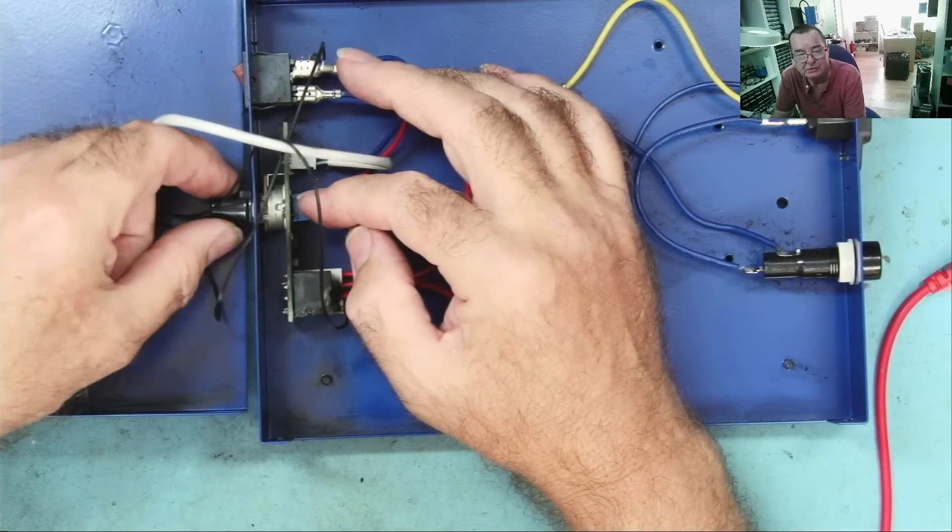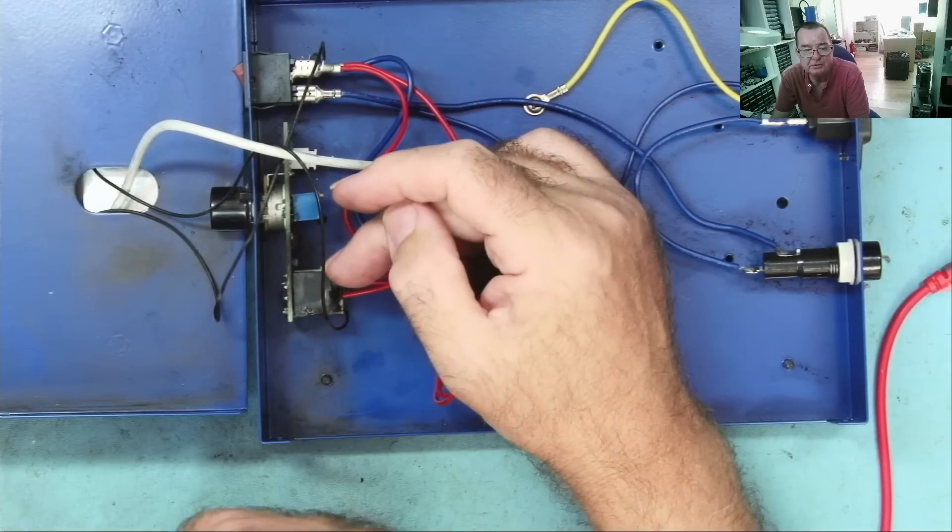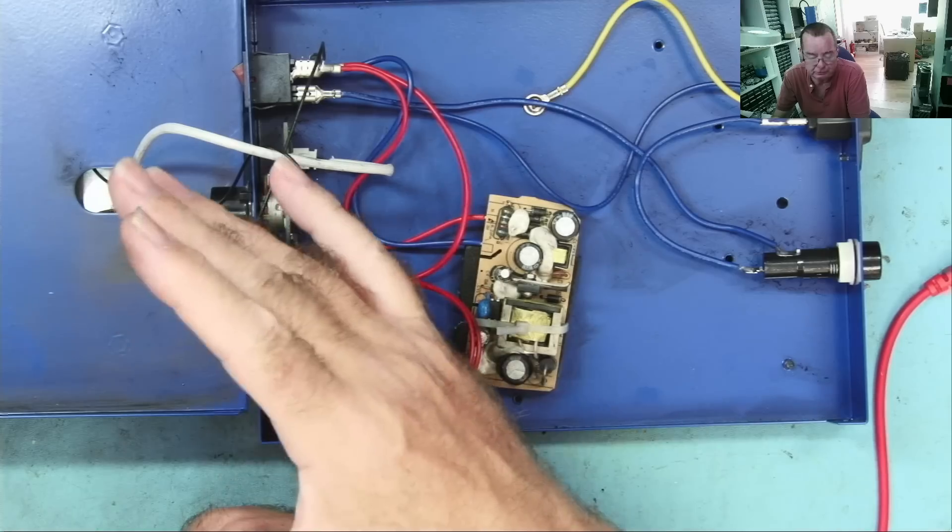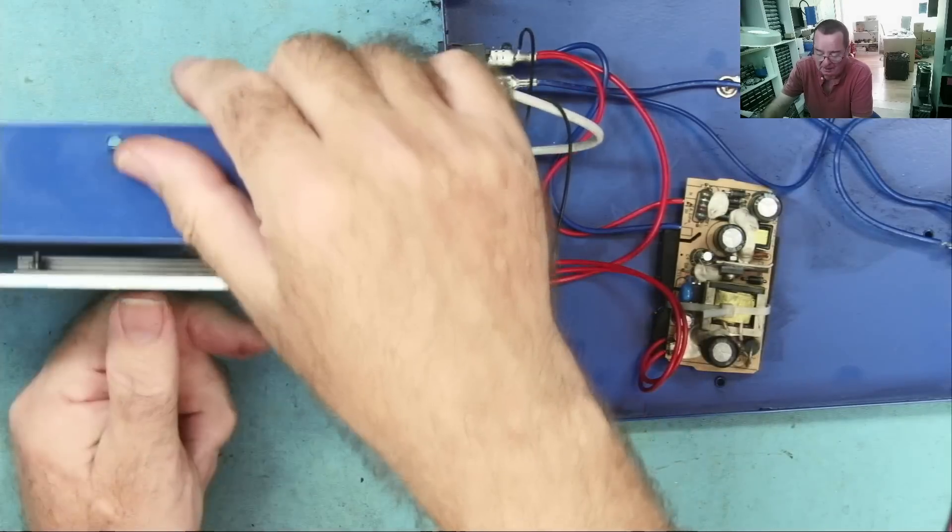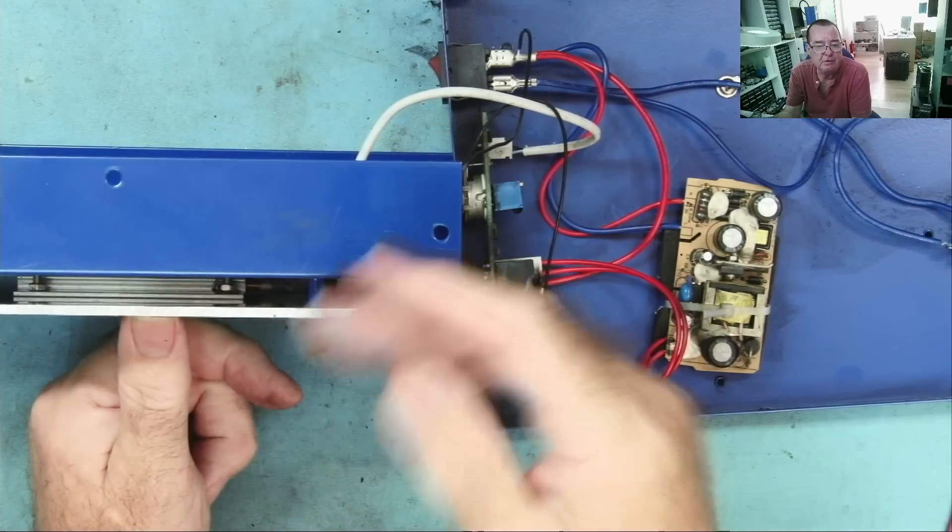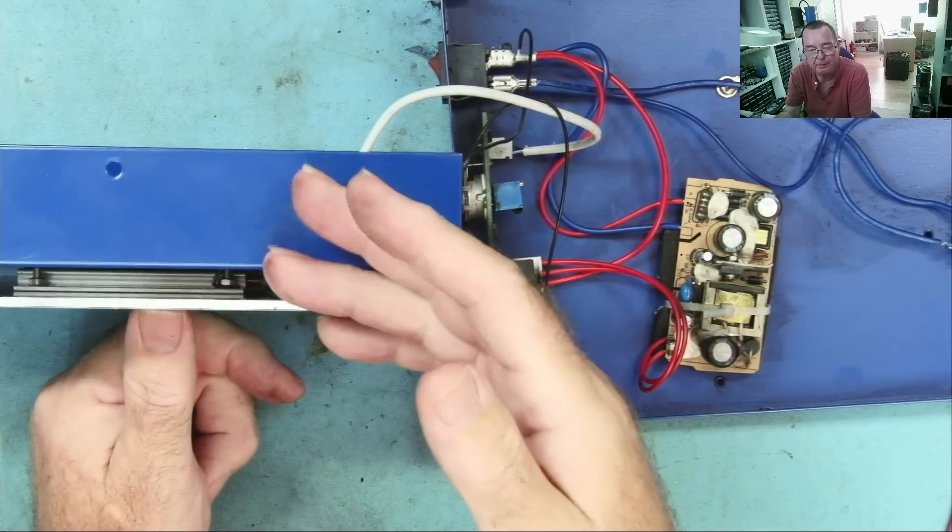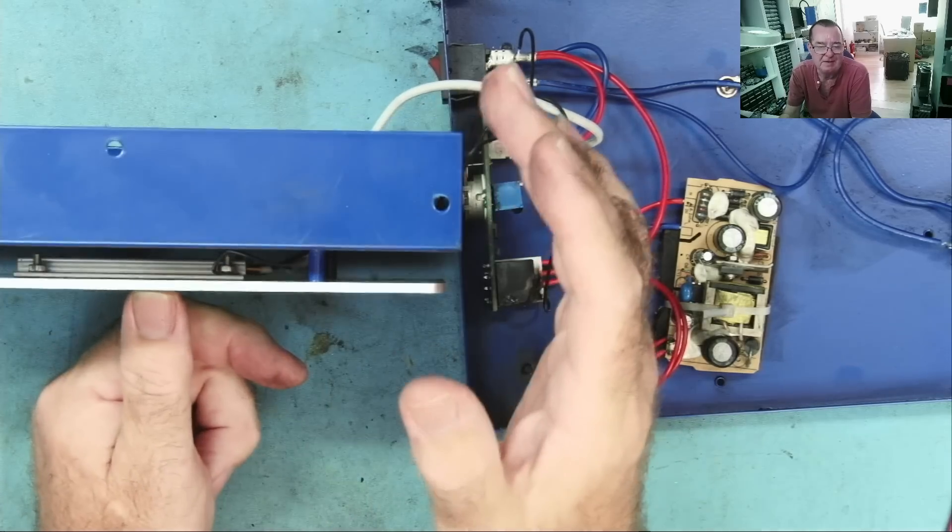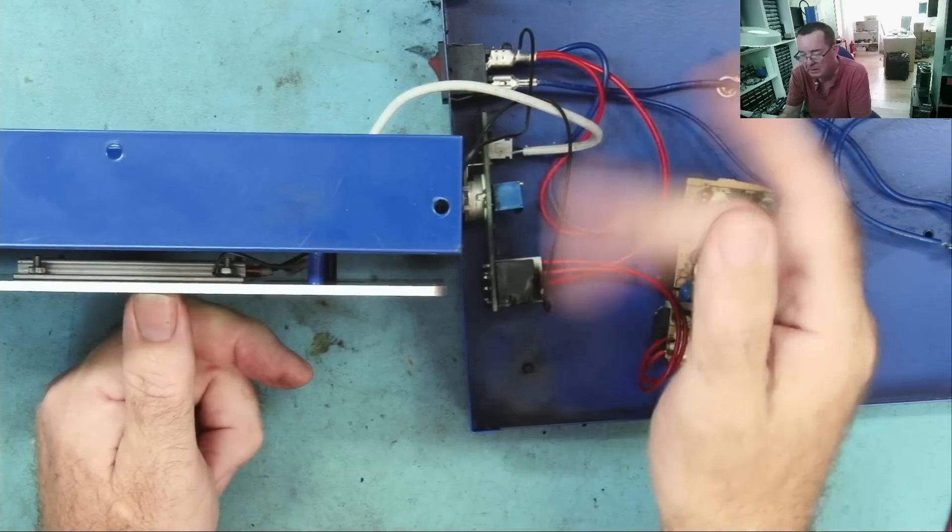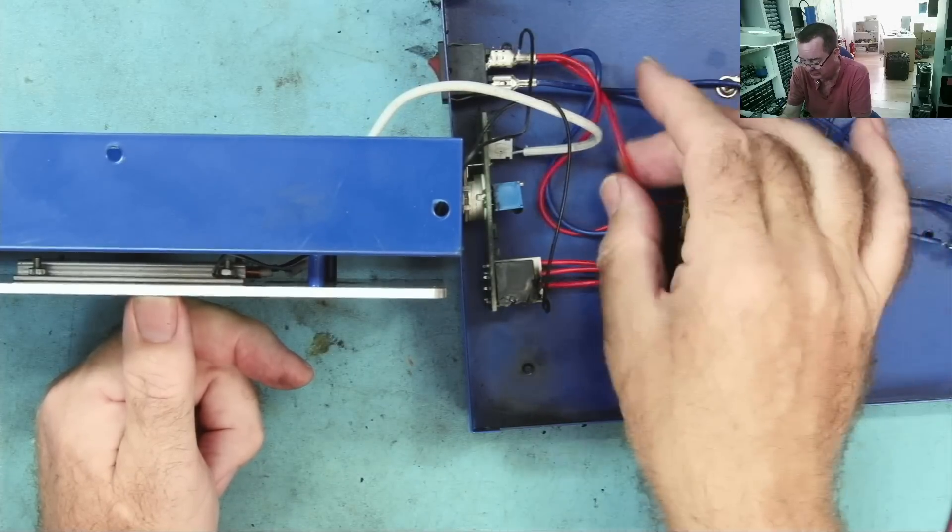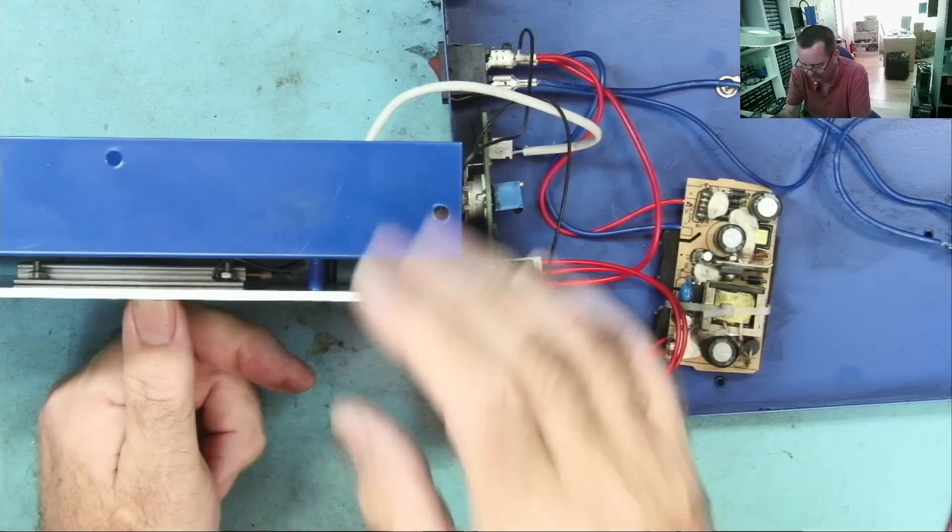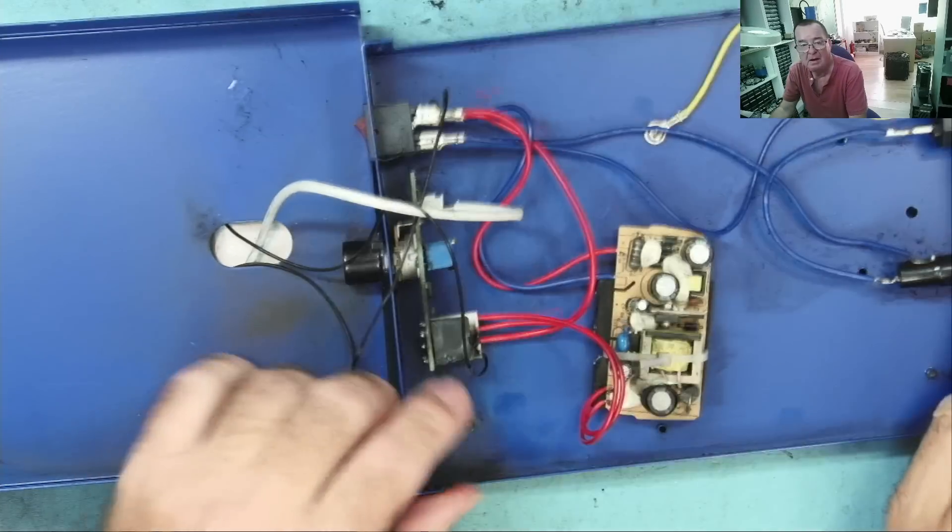This black wire, I think powers the heating element. This is the return from the heating element, which goes to the other side of the power. Yeah, that makes sense. Power coming in here, live, neutral, whichever. And this must be a thermocouple that's measuring the temperature. And that is then being monitored by this circuit.